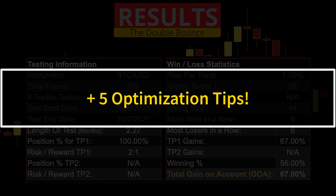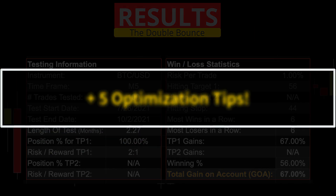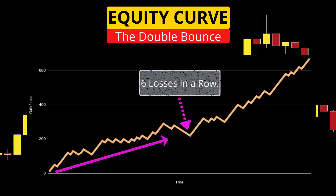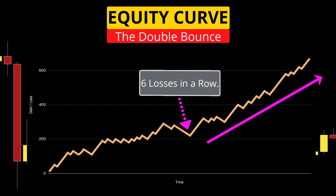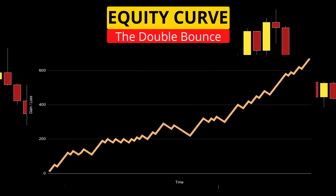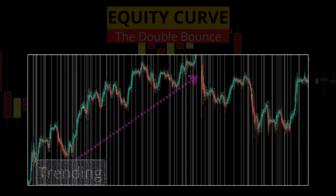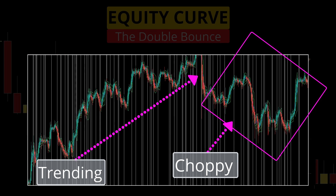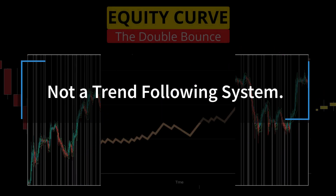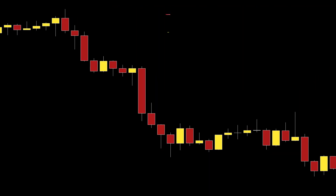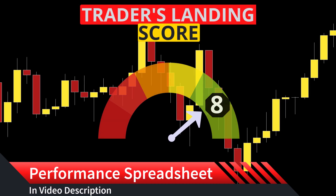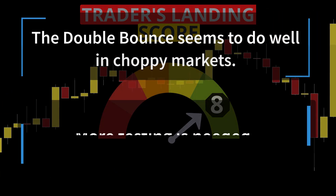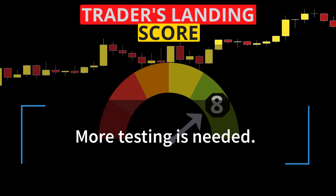I'm going to give you my five optimization tips that will make this strategy endure better over a larger data set. The equity curve here is what most traders would like to see — we start right away with an impulsive move up, followed by a short duration drawdown from the six losses in a row, and then the second half of the test ends with a huge impulsive move. Looking at all the trades on the four-hour chart, this system actually performs better when the higher time frame is a bit more choppy, because this is not a trend-following system and seems to do better during ranging market conditions. I give this system a Trader's Landing score of eight, because I am a trend trader, but the data indicates this may work well during consolidation — though only more testing will confirm for sure.